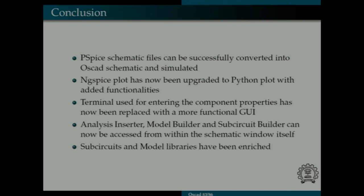This is the edit option. Earlier in the previous version of OSCAD, when the user clicks on edit he had a long list of all the model files that are present. He would not be able to figure out which model file is associated with which component. So now he can directly click on edit and the model file that is associated with that particular component opens up and he can edit those values. This is the import option. This feature is newly added. Earlier the user was not able to change the file name of the imported model. Now this has been integrated. To sum up, I would like to conclude that these are the key features that have been included in OSCAD version 2.0. PSPICE schematic files can now be successfully converted into OSCAD schematic and be simulated. NGSPICE plot has now been replaced by Python plot with added functionalities. Earlier a terminal was used and now it has been replaced by GUI. Analysis inserter, model builder and sub-circuit builder can now be accessed from the schematic itself and the libraries have been enriched.